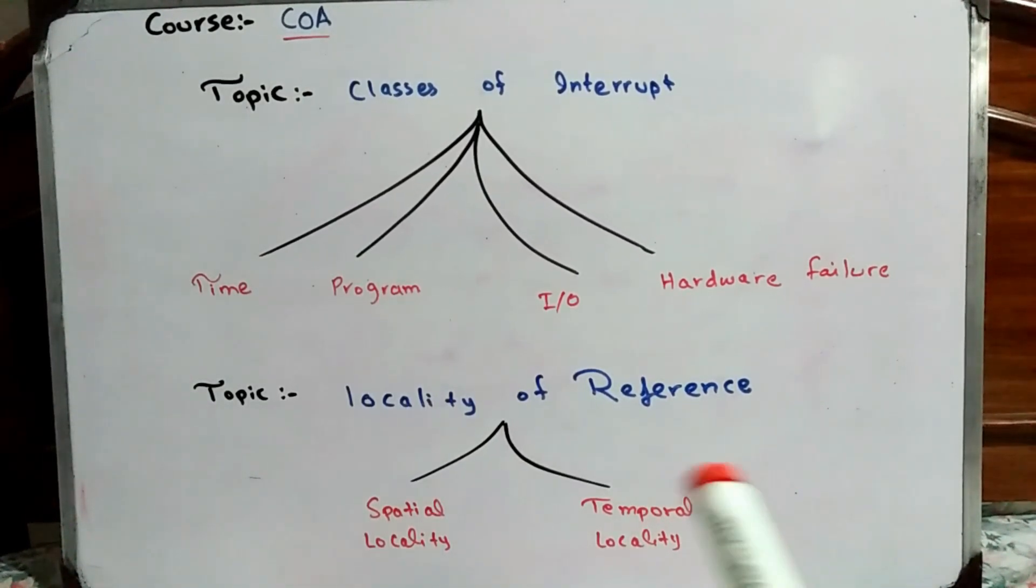The second type of locality of reference is temporal locality. In temporal locality, the CPU can access the same block, and in that same block, can access the same word and transmit it to the CPU.